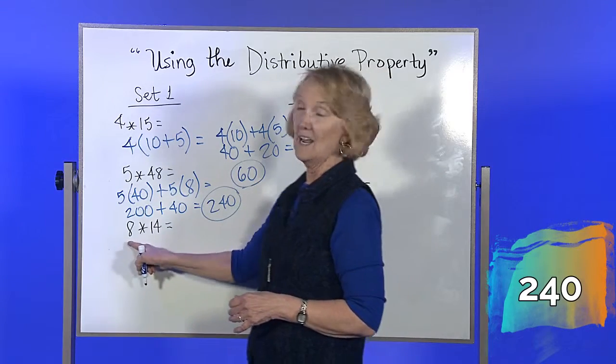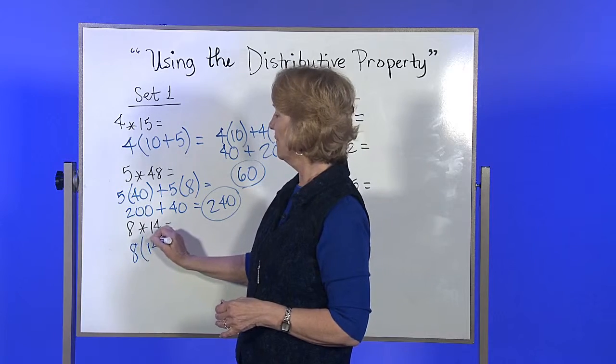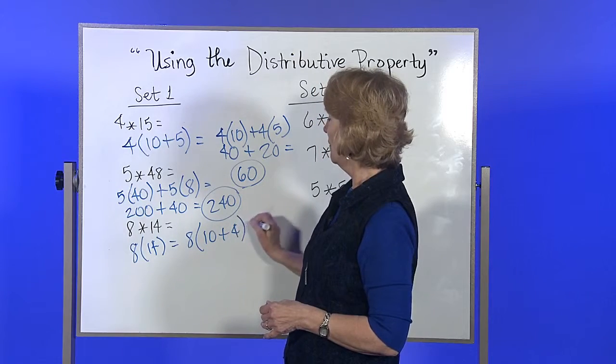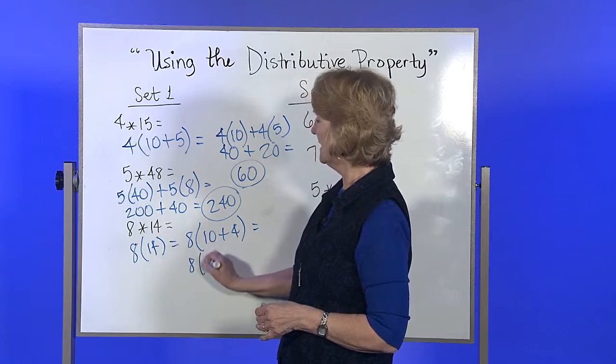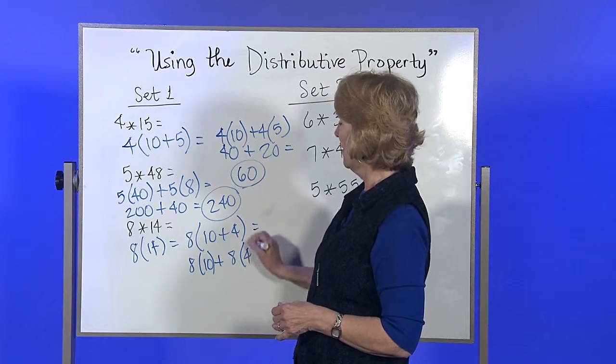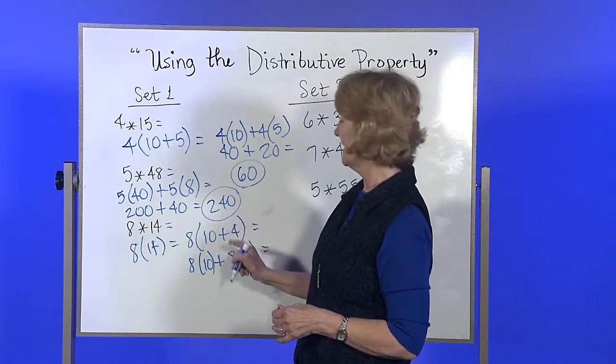Next one, 8 times 14. 8 times 14 becomes 8 times 10 plus 4, which becomes 8 times the 10 plus 8 times the 4. You're going to distribute this factor times each of the parts inside.